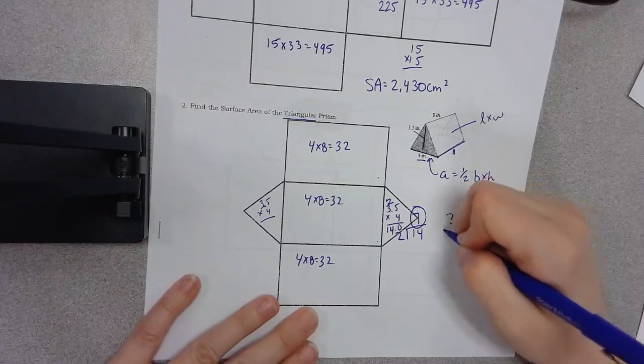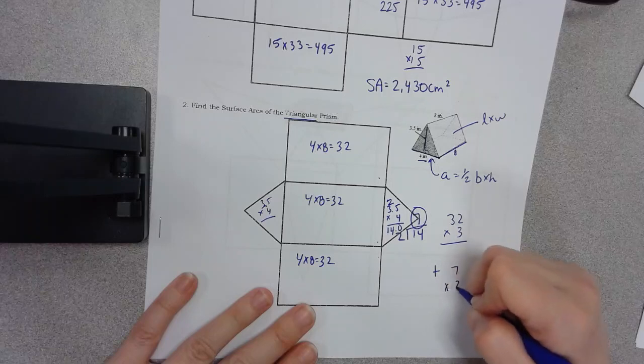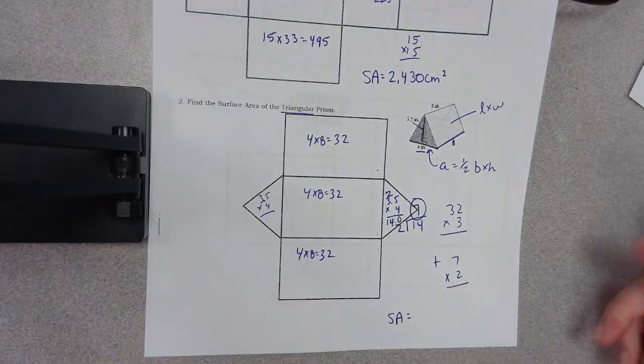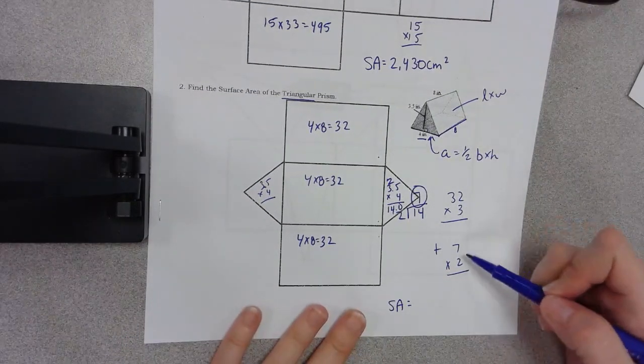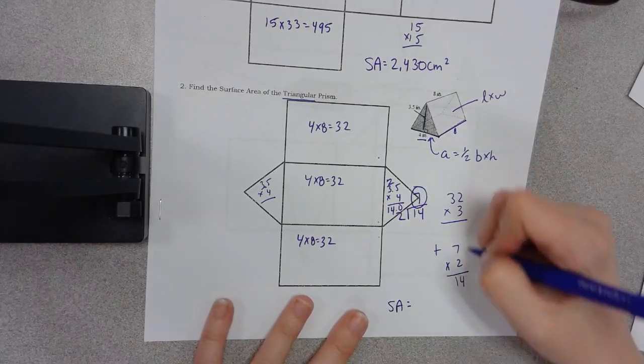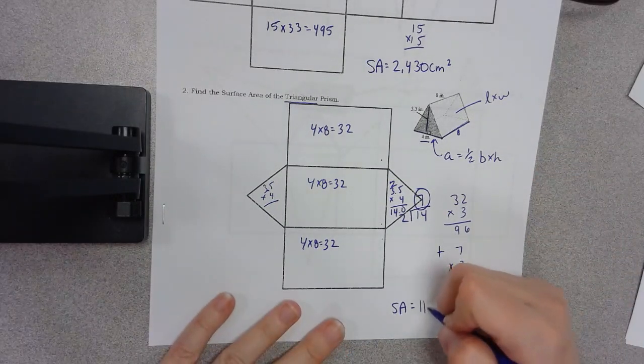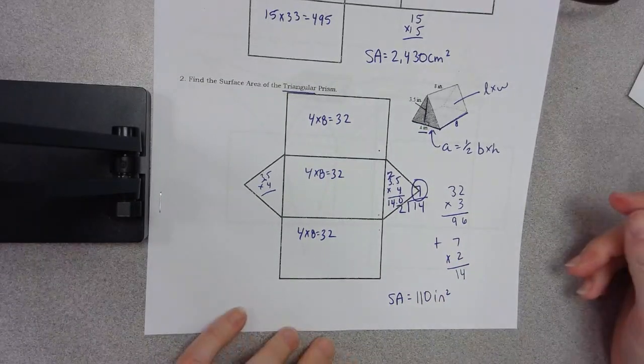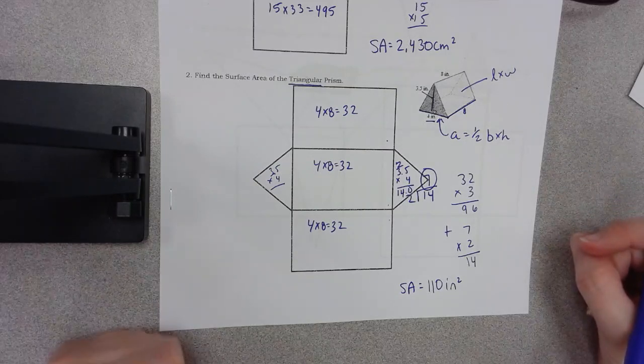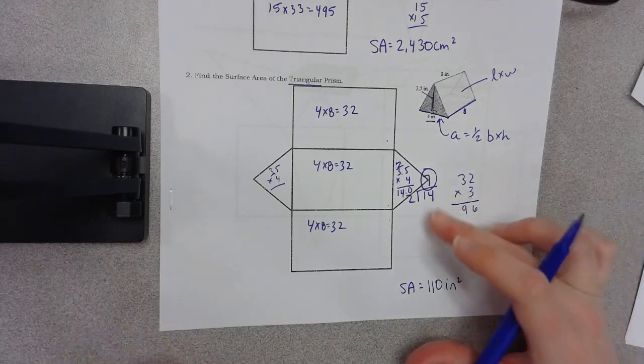So now I've got 32 times 3 plus 7 times 2. And you should be figuring out your surface area. Pause the video. 32 times 3, 7 times 2 and add those together. Welcome back. And 96 plus 14 is of course 110 inches squared. So you should have some of this work. So either you're pausing the video and you're doing it yourself or you're being lazy and you're just copying down what I wrote. Either way you need to make sure you have your computation written down.